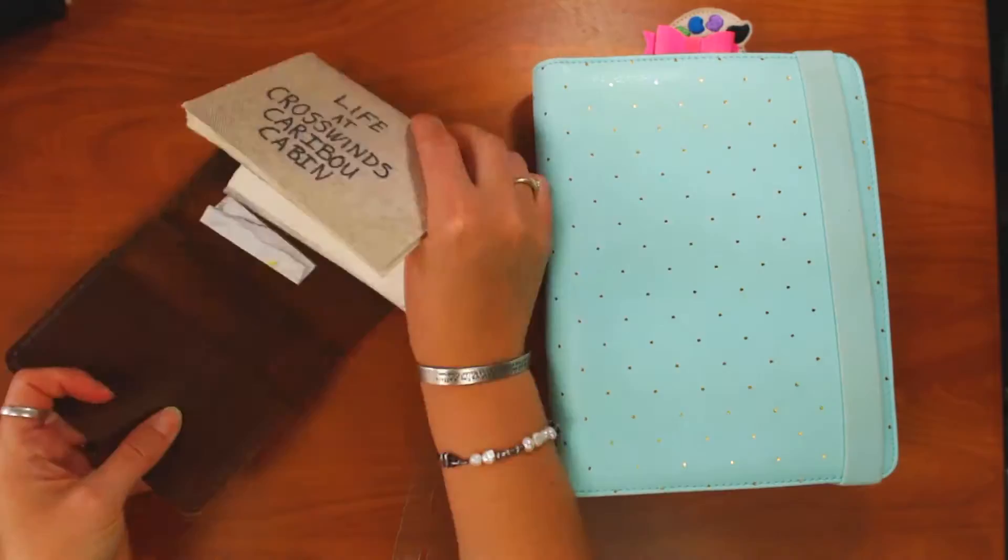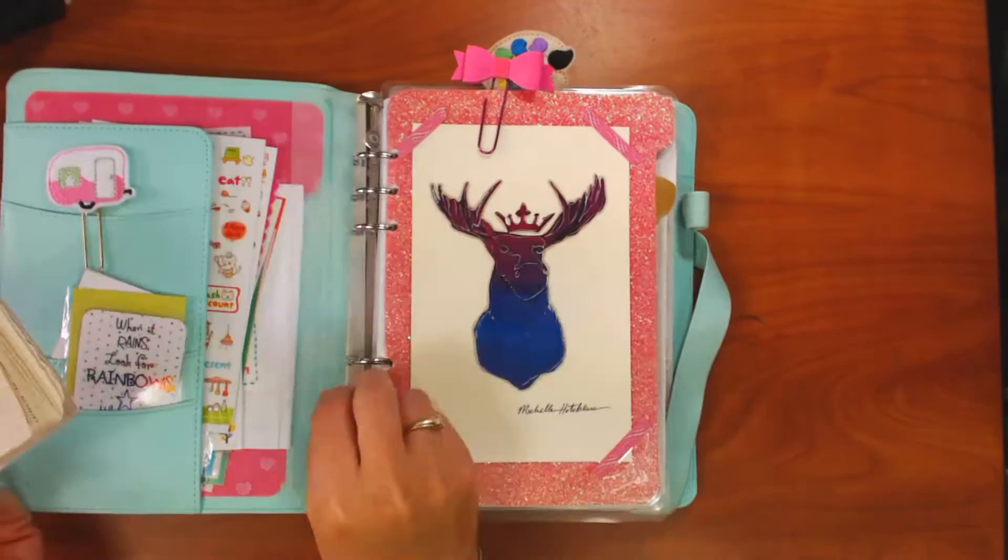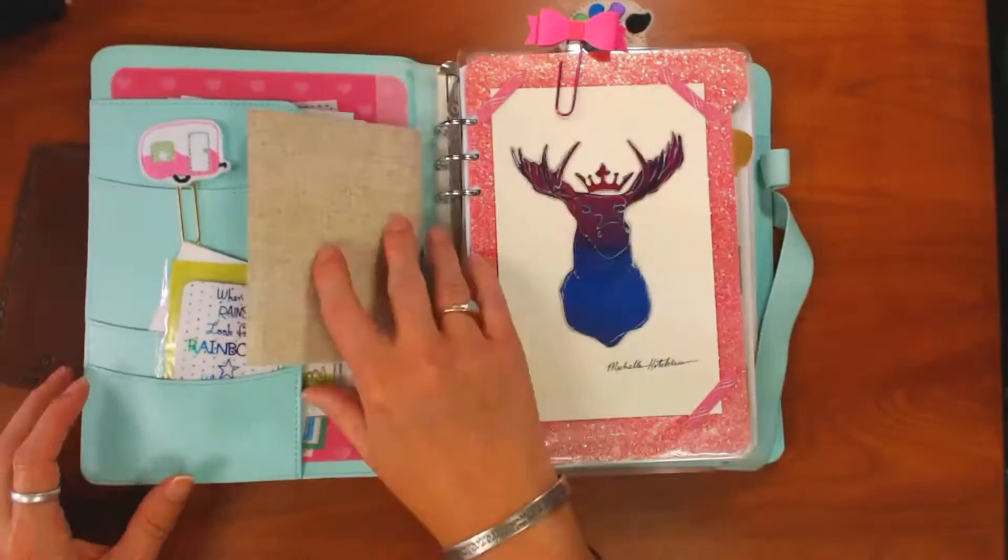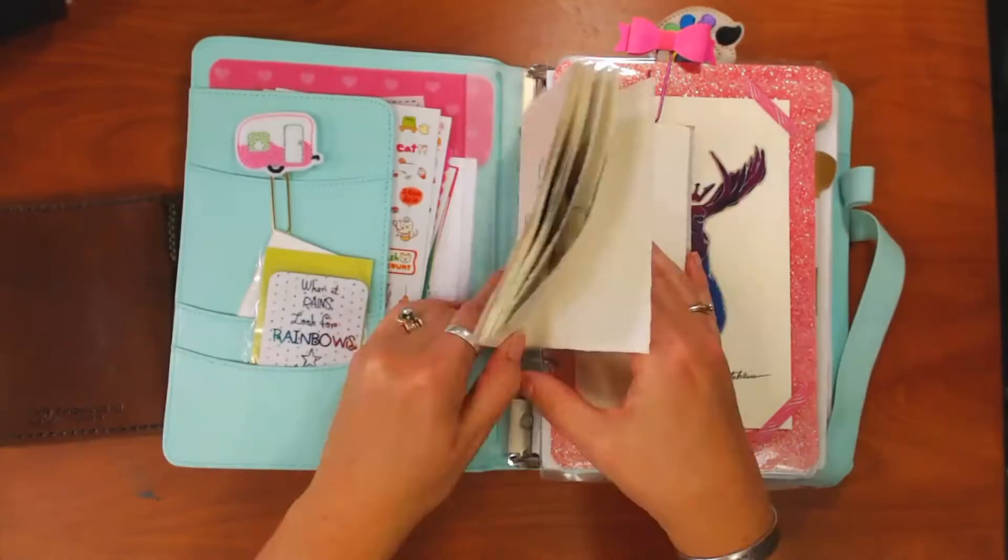As you can see, I simply place the smaller adapter onto the rings and close it up. I slide in my little pocket art journal or insert, and my little pocket insert is held nice and secure inside the larger binder.